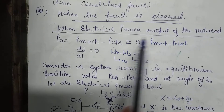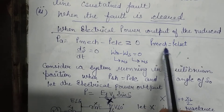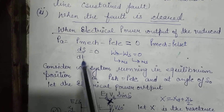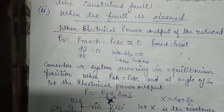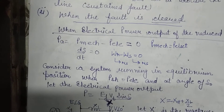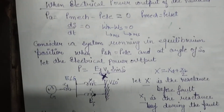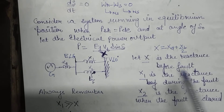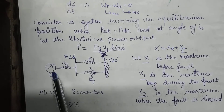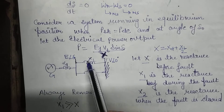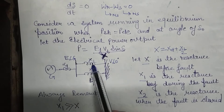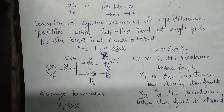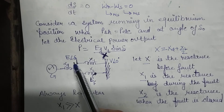Let's revise the equilibrium position: acceleration power is zero because mechanical power equals electrical power, and change in rotor angle with respect to time is zero. We have a double circuit line where a fault has occurred. This is your generator, the generator reactance, and the two transmission line reactances. This is the infinite bus bar V at angle zero degrees, and the generator voltage E at angle delta.